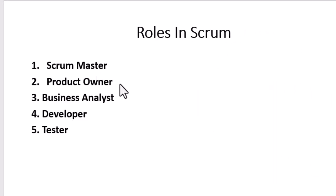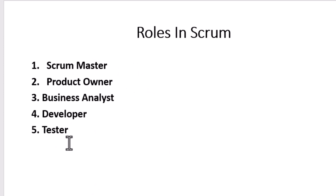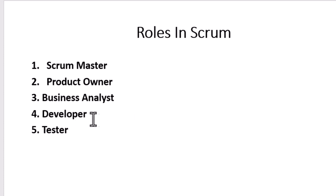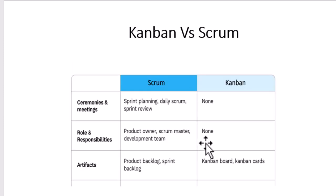There will be one Scrum Master and one Product Owner. Business Analysts can be two to three people, and Developers and Testers can be more. This is called one Scrum team — it consists of one Scrum Master, one Product Owner, and one or many Business Analysts, Developers, and Testers. In Kanban, you don't have these defined roles. Most IT companies follow Scrum.